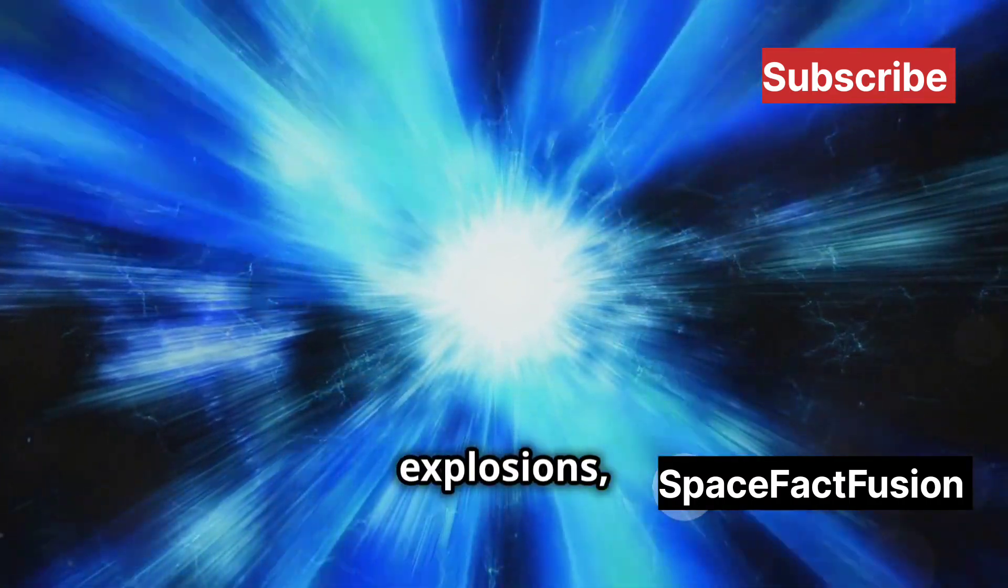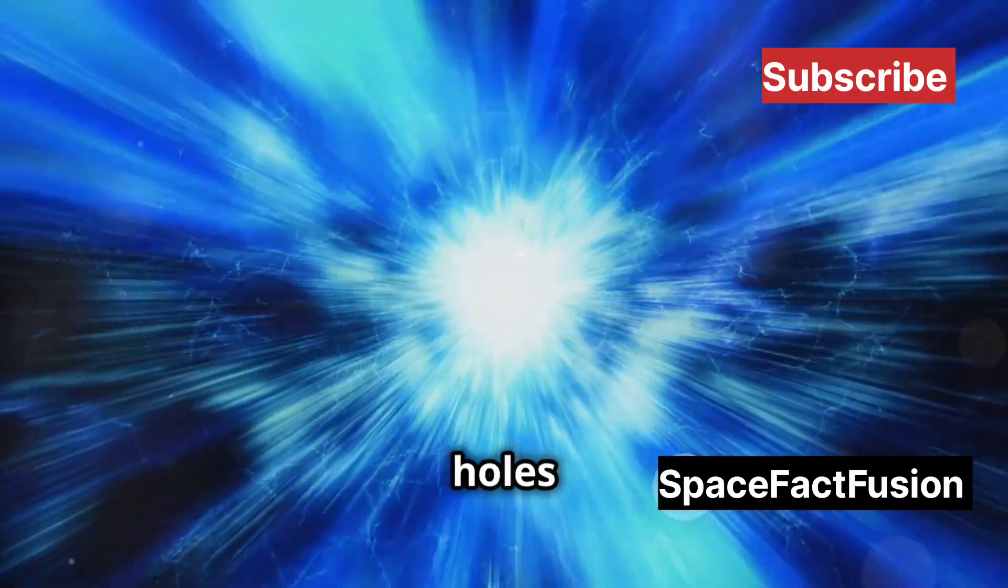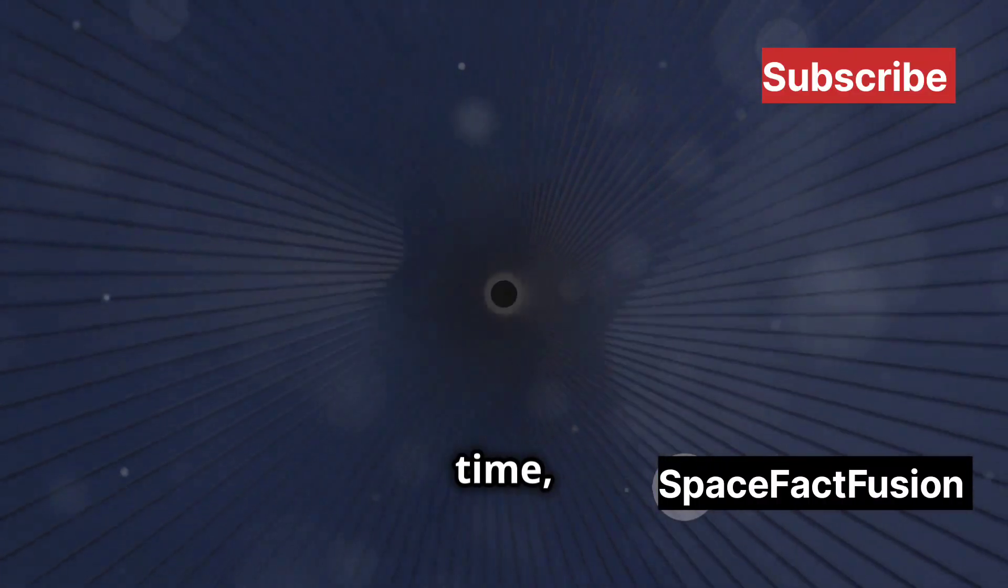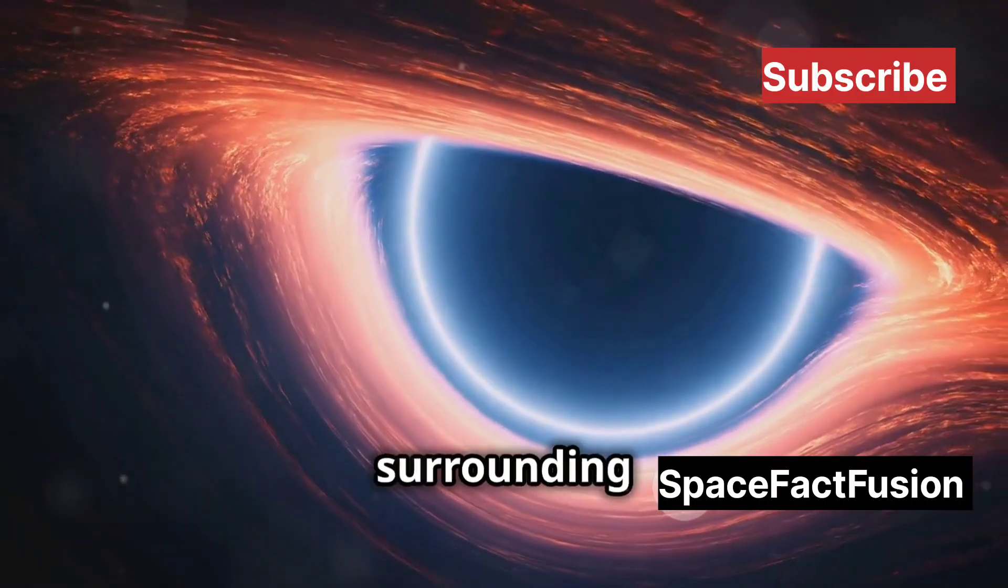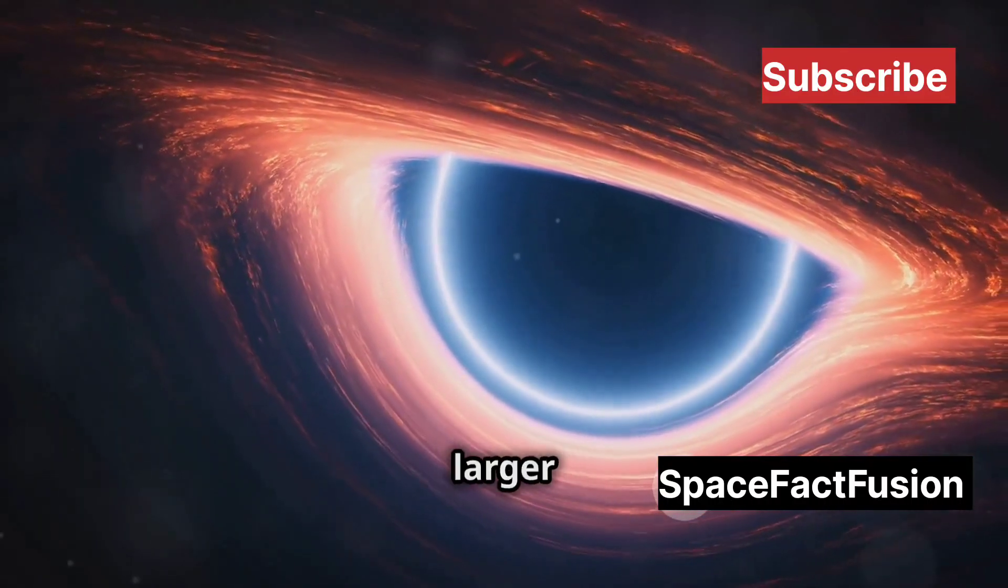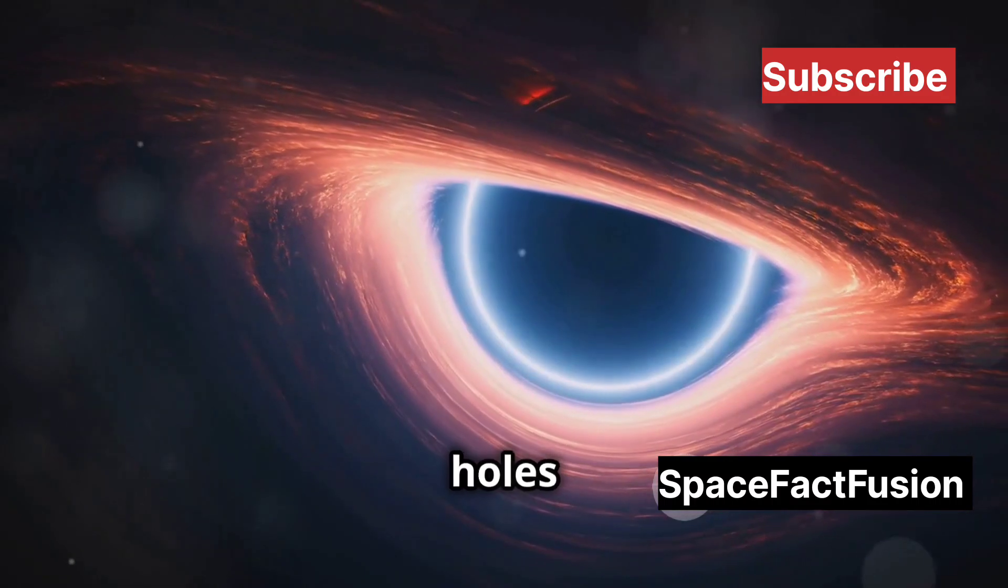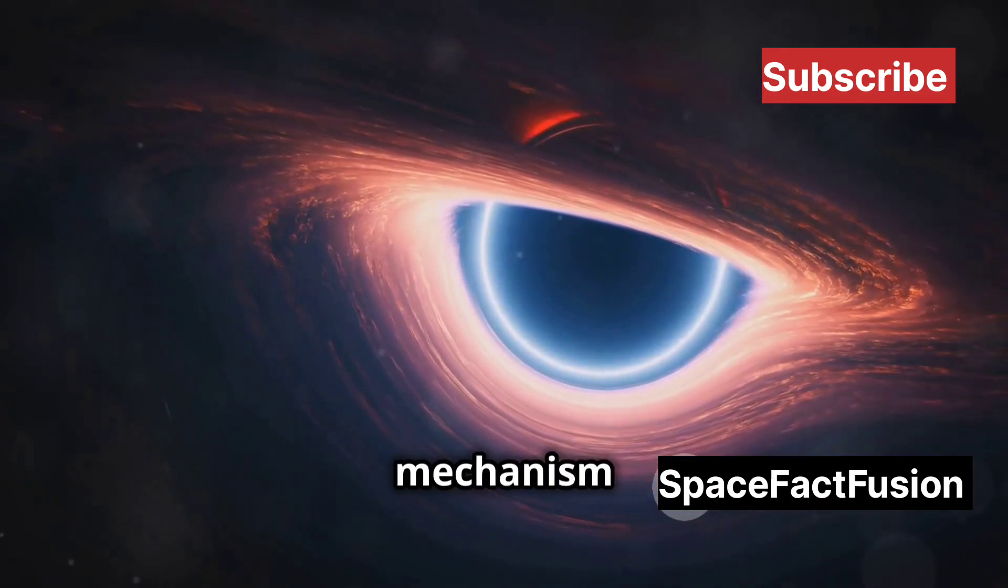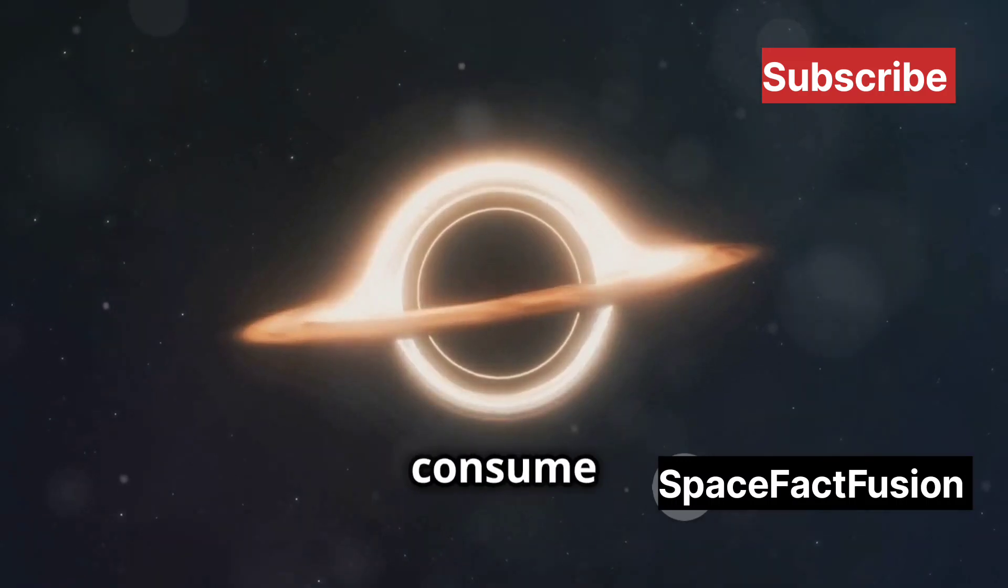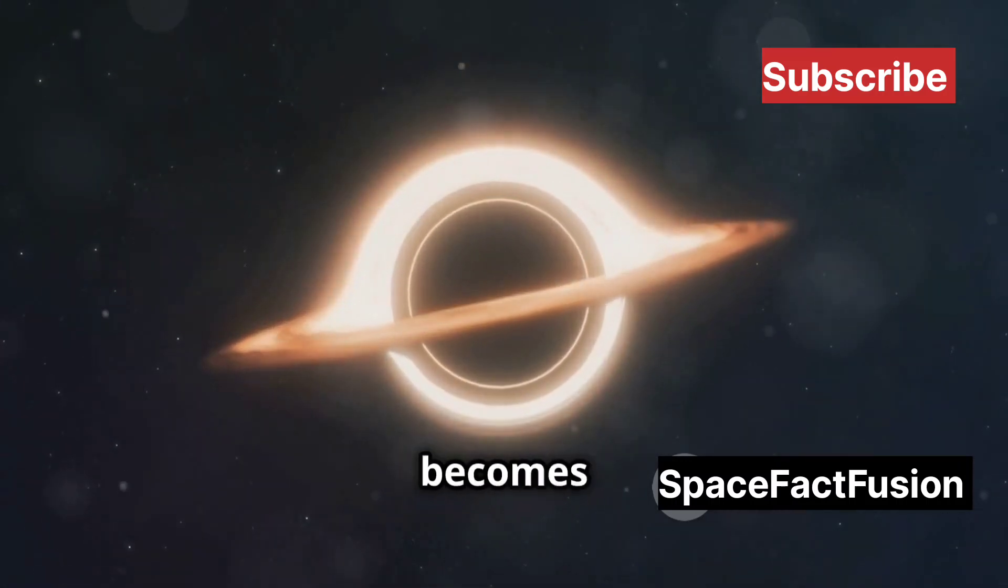The supernova explosions were so powerful that they could outshine entire galaxies for a brief period. The remnants of these explosions, the black holes, were the seeds from which supermassive black holes could grow. Over time, these stellar-mass black holes could have merged and accreted surrounding gas, gradually growing larger and larger. The process of accretion, where black holes consume gas and dust from their surroundings, is a critical mechanism in their growth. As they consume more material, they become more massive, and their gravitational pull becomes stronger.